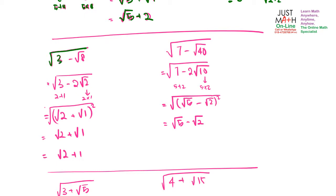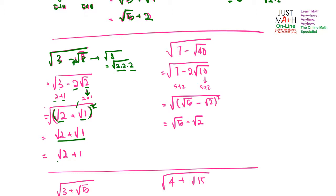Next example: root of (3 minus root 8). You want to create a 2 in front. Root 8 is the same as root of (2 times 2 times 2); take out the 2 to get 2 root 2. Now 2 root 2 means the coefficient is 2, and root 2 is 2 times 1, while 3 is 2 plus 1. So you get (root 2 plus root 1) squared. Remove the square to get root 2 plus root 1, which simplifies to root 2 plus 1.